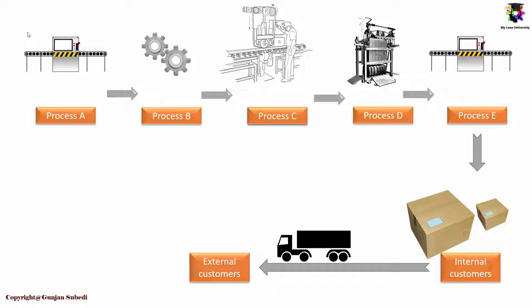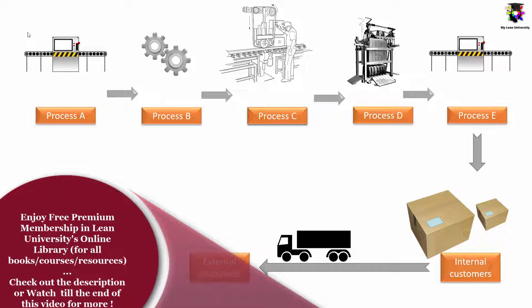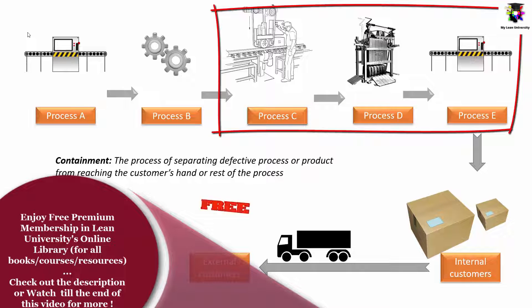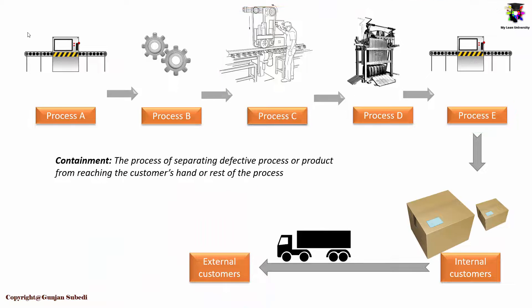Once the problem is identified, it is necessary to separate the problem-varying process from the rest. Suppose you know for sure that process A and B do not contain the problem but you aren't sure about process C, D, and E — any or all of these processes may have some problem. So we have to separate these processes so that they do not further contaminate or affect the other processes, and we must ensure the defective products do not reach the hands of customers. This is called containment or sealing.